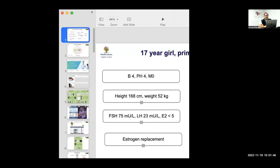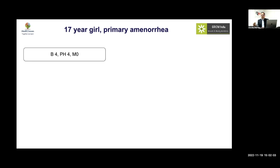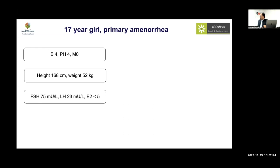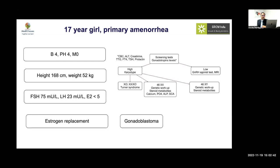This is a 17-year-old girl with primary amenorrhea who presented with stage 4 breast development, pubic hair development, but no menstrual cycle — a tall girl with normal development otherwise. FSH was high, LH was high, and estradiol was low, so our diagnosis of hypergonadotropic hypogonadism was established and she was started on routine replacement therapy.